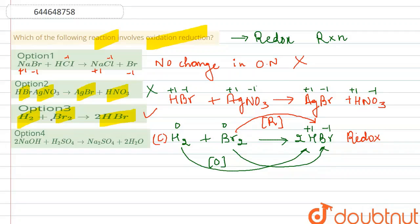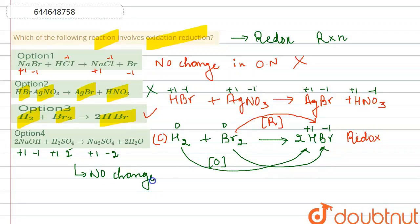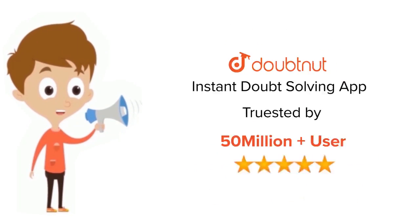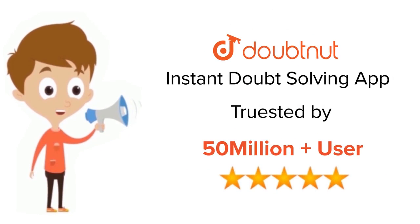Looking at option 4, the sodium compound: Na is +1, and the oxidation states are −1, +1, −2, and in the products also +1, −2 — no change in oxidation state. So option 3 remains the correct answer. Thank you. For class 6–12, IIT JEE, and NEET level, trusted by more than 5 crore students — download DoubtNut today.